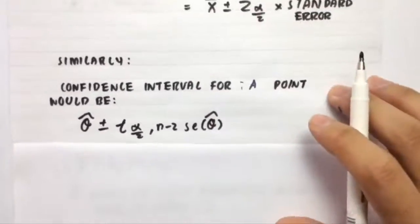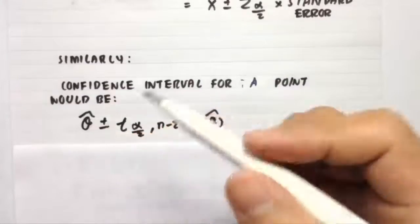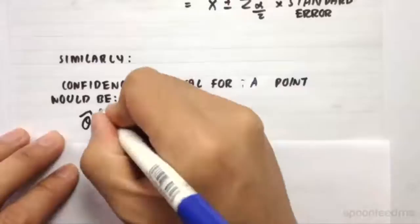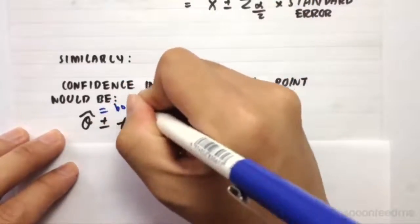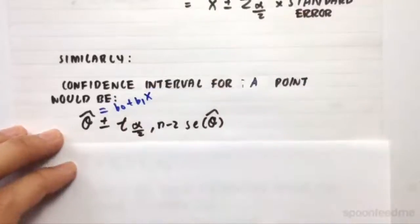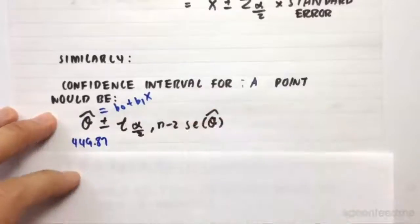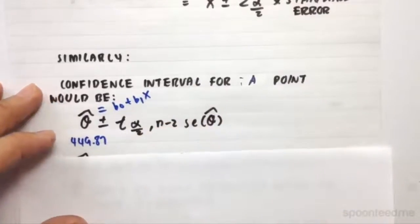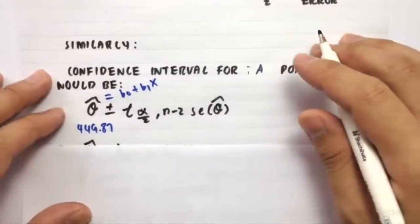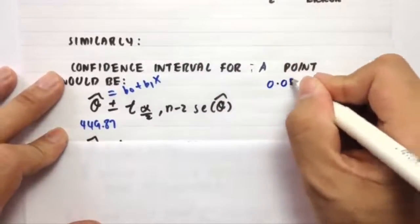So similarly, if we apply this to the confidence interval for a point in our regression model, it would equal to theta hat. Theta hat equals beta zero plus beta one X. So for example, in our case, it would be 449.87 plus or minus T alpha over 2. So if we're given a significance level of, for example, 0.05...